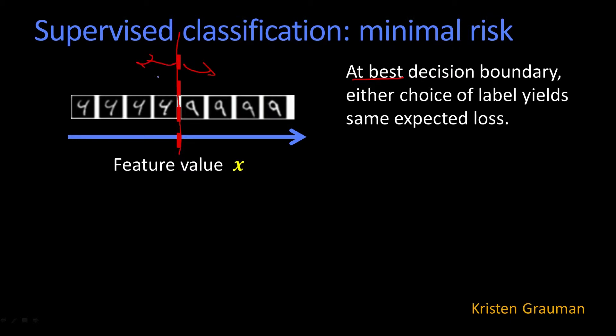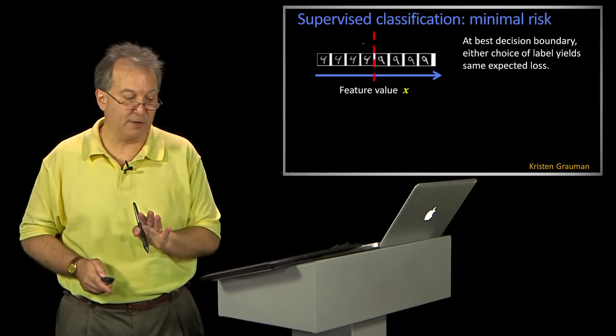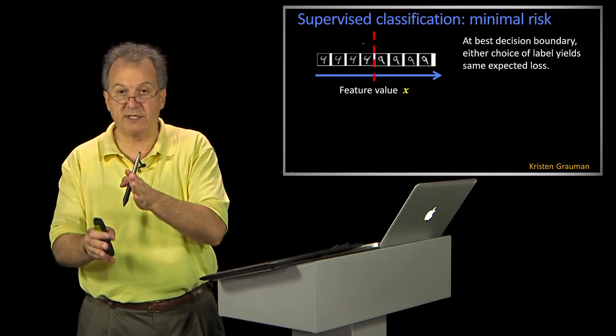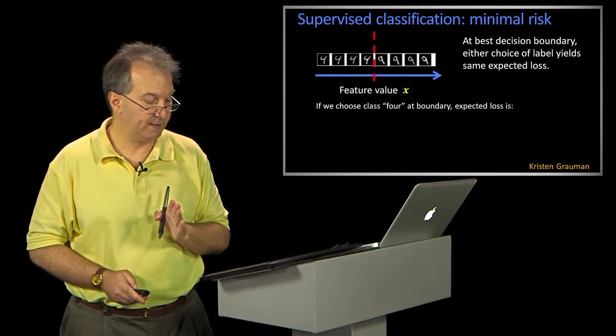So at the best possible boundary, the expected loss is the same, regardless of which label I announce.